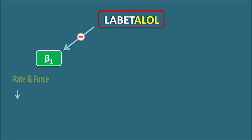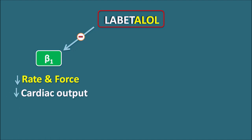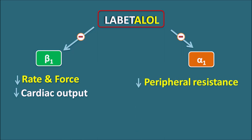To conclude the actions of Labetalol: it blocks beta-1 receptors on the heart, decreasing the rate and force of contraction, which results in decreased cardiac output and decreased cardiac work. Similarly, it blocks alpha-1 receptors producing vasodilation, which decreases peripheral resistance. As peripheral resistance decreases, cardiac work decreases. By acting on both the heart and vascular smooth muscle to decrease cardiac work and increase cardiac efficiency, Labetalol is used as an antihypertensive.